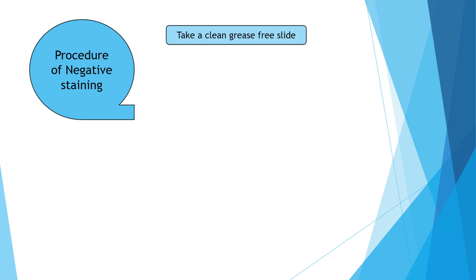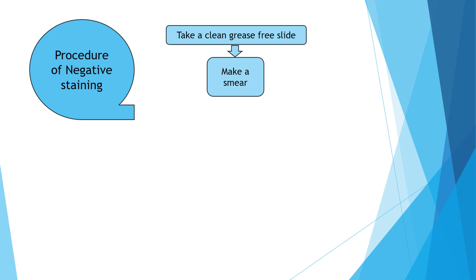First, take a clean grease-free slide. To make a clean grease-free slide, take a glass slide, wash it with detergent, air dry the slide, then pass the slide through a Bunsen burner flame two to three times. Then you will get a clean grease-free slide. Further, make a smear.